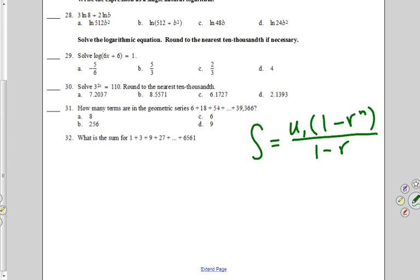So we need the first term. Do we know that? 6. By the way, are we sure this is geometric? Yes, because it's multiplying by 3 every time, right? It's multiplying by 3 every time. So it's geometric. Then you do 1 minus, I just said what it's multiplying by, 3. That's my r. To the nth power divided by 1 minus 3.